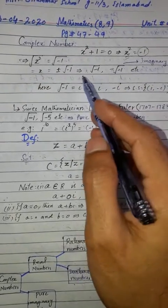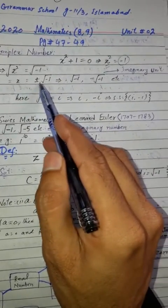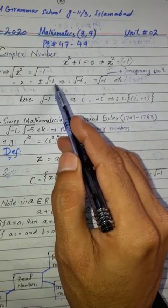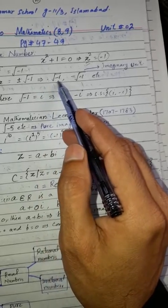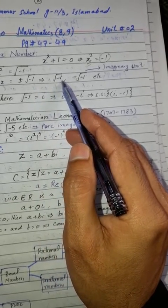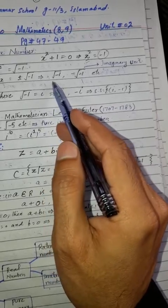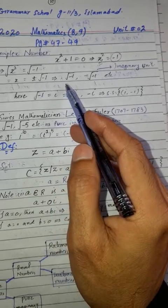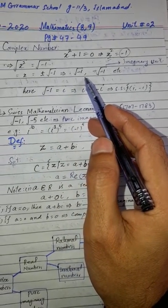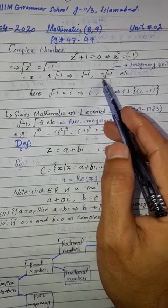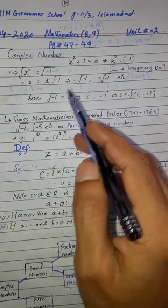When we take the square root, we get plus or minus the square root of minus 1. This is the essence of the problem: minus 1 under the square root, because two times two gives minus times minus which is positive. So this value doesn't exist in real numbers.